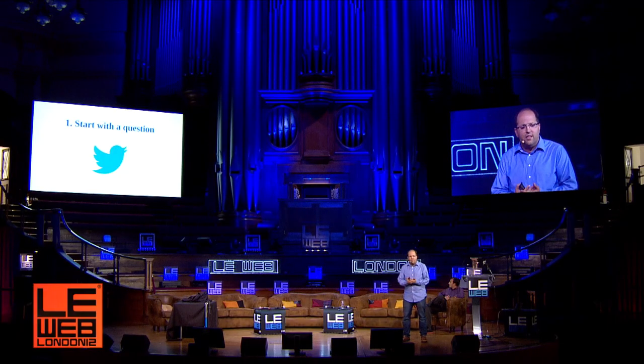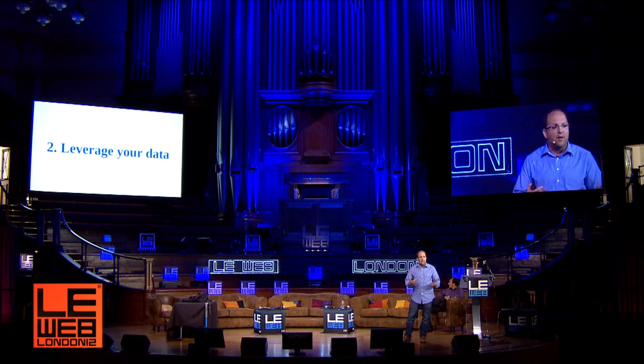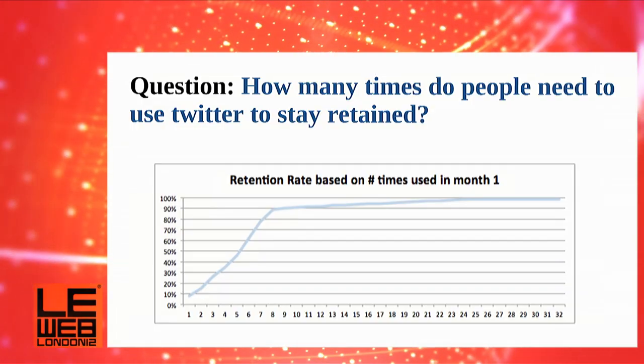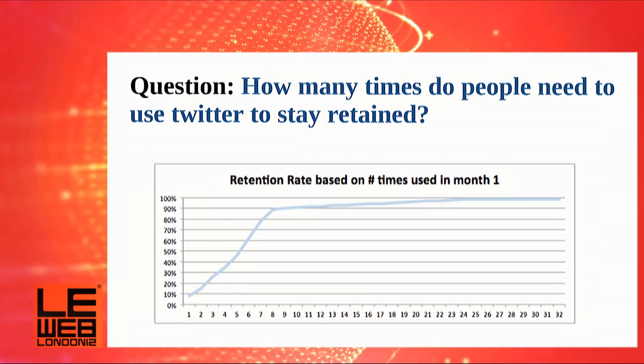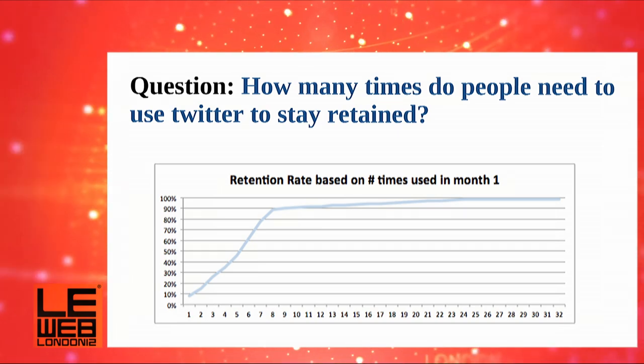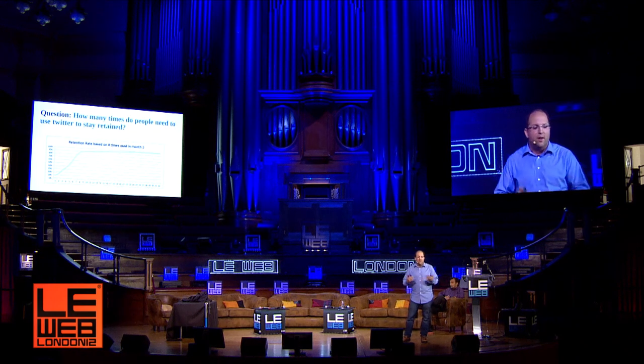Going back to the data scientific method, we started with a key question: why do the people who love Twitter get it, and how can we help all the other people get there much faster? The next step is to leverage your existing data — understand behavior from what's currently happening in your product. At Twitter, we asked: what is it about the people that get it? Can we separate the people who understand and actively use Twitter from those that aren't? We looked at how many times you used Twitter in one month and whether you came back in the second month. Right around seven times a month was this magic number — if you used Twitter at least seven times in a month, over 90% likely you'd come back month over month. Most people who signed up might have used it the first day, maybe came back once, but didn't really stick.